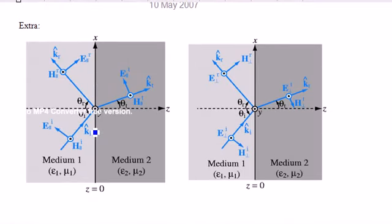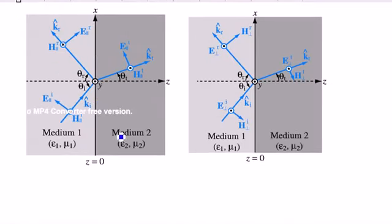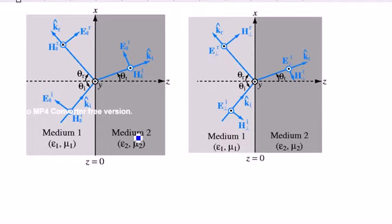If we move to the next page, these are two figures from our textbook from Ulaby showing on the left the electric and magnetic field configurations for parallel polarization and on the right for perpendicular polarization.